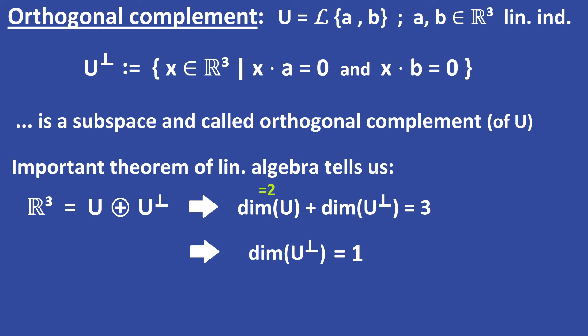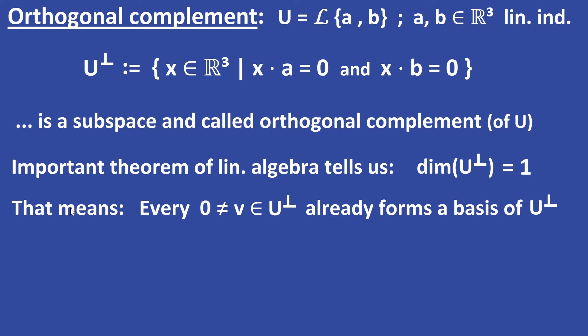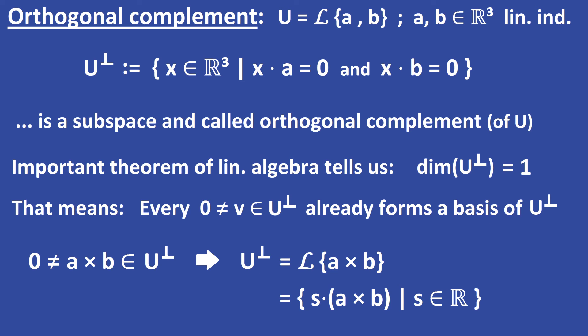Because the orthogonal complement has dimension 1, every non-zero vector in it already forms a basis. The cross product of the linearly independent vectors A and B is a non-zero vector in the orthogonal complement, since the cross product is orthogonal to both A and B. Therefore the cross product of A and B forms a basis of the orthogonal complement, which is generated by the cross product vector and contains elements S times (A cross B), with S in R.